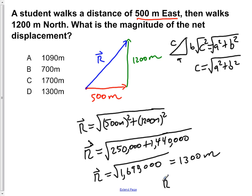So our magnitude of R is 1,300 meters. If we go to our answer choices now, A says 1,090 meters, it's wrong. B says 700 meters, wrong. C says 1,700 meters, it's too great. D says 1,300 meters, which is our calculated value. So D is correct.